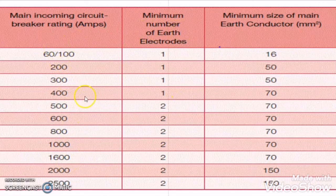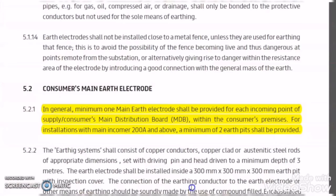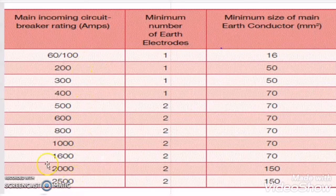In DIVA and ADDC regulation, the size of the conductor will be the same as per the breaker rating, but the number of earth pits will change. As per the ADDC regulation, two pits are required when the incomer rating is 500 ampere and above. But for the DIVA regulation, after 200 ampere of the main incomer rating, two earth pits are required. However, the cable size in both ADDC and DIVA regulation will be selected the same as per this chart.